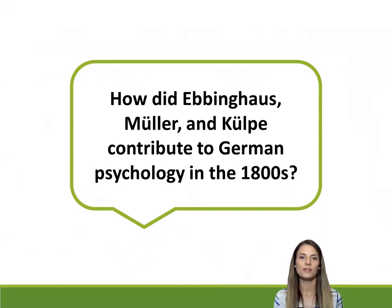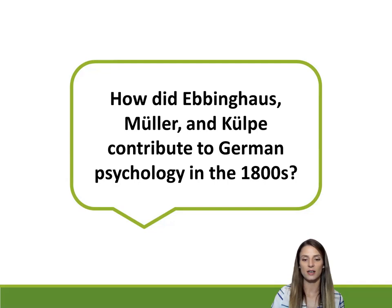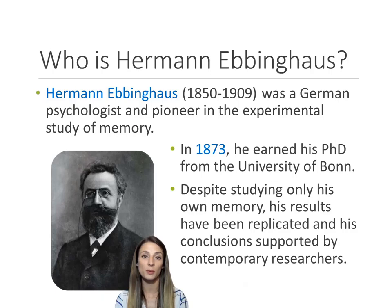Now that we've talked about Wundt, the father of psychology, we have one last group of German contributors to discuss: Ebbinghaus, Muller, and Kolpe, and some of their contributions to German psychology in the 1800s and even the 1900s.